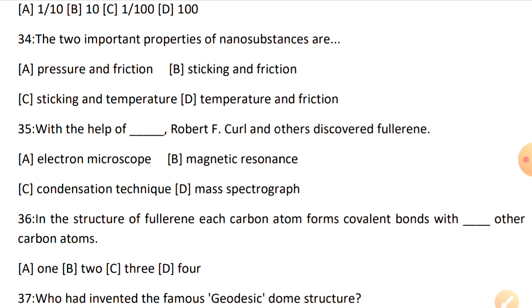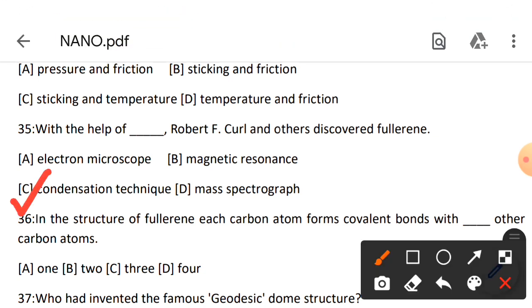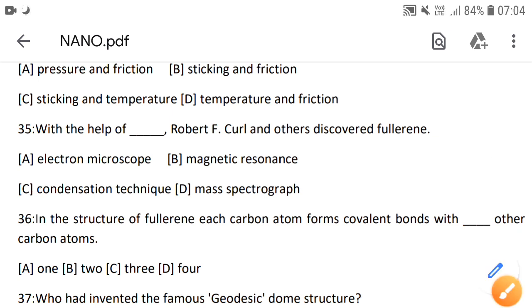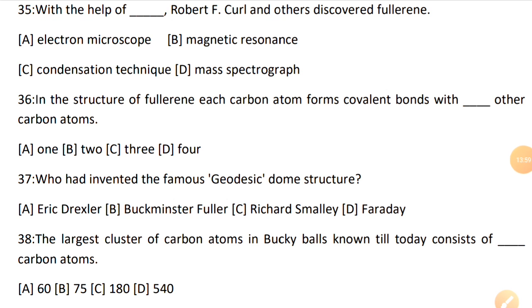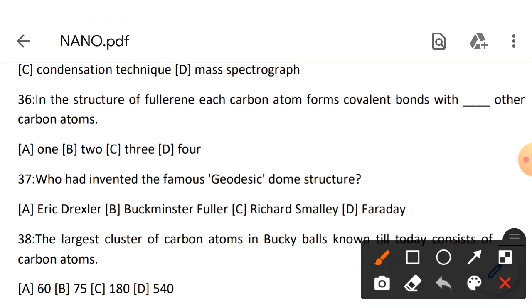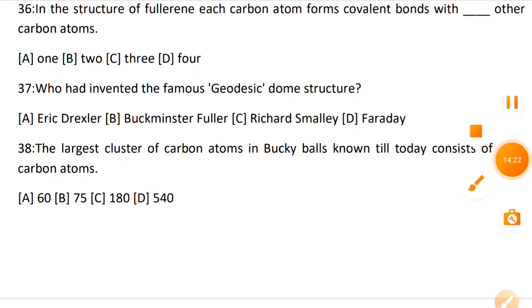Next question: condensation technique. In fullerene, each carbon atom forms covalent bond with dash other carbon atoms. Carbon atoms combine, so obviously one with three. Answer will be C, that is three.